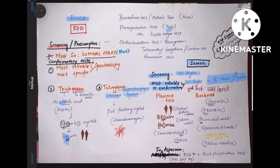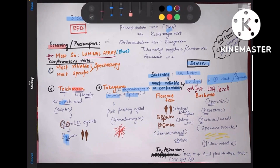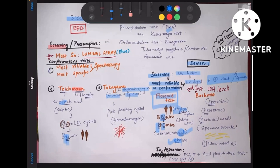Coming to the Florence test: the Florence test is for choline, and here you also get brown colored rhombic shaped crystals. Choline is found in seminal vesicle secretions. The reagent used is iodine, so you get choline iodide crystals which are brown in color and rhombic in shape. Don't confuse these brown rhombic crystals with those from blood stain tests, because in exam questions the specimen — blood or seminal stain — will be clearly specified.